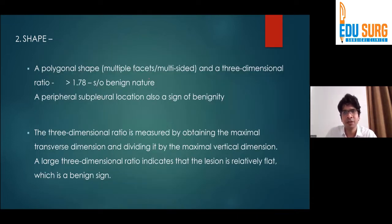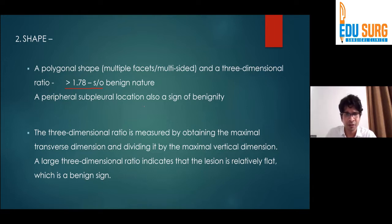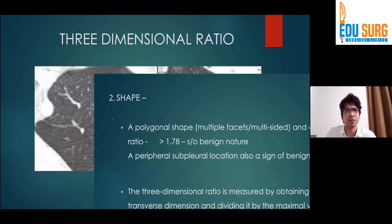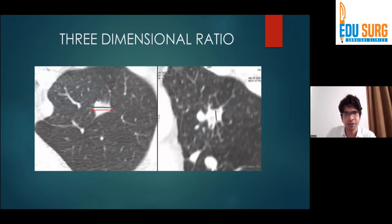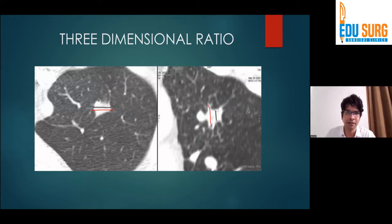For shape, we take into consideration a three-dimensional ratio of the size. If this ratio is more than 1.78, there are more chances of the lesion being benign. This ratio is basically the maximum transverse dimension divided by the maximal vertical dimension. So the ratio of transverse to vertical dimension, if it is more than 1.78, it is more likely to be a benign lesion.